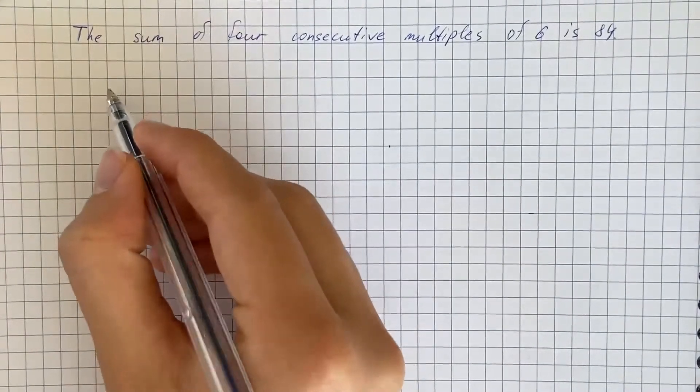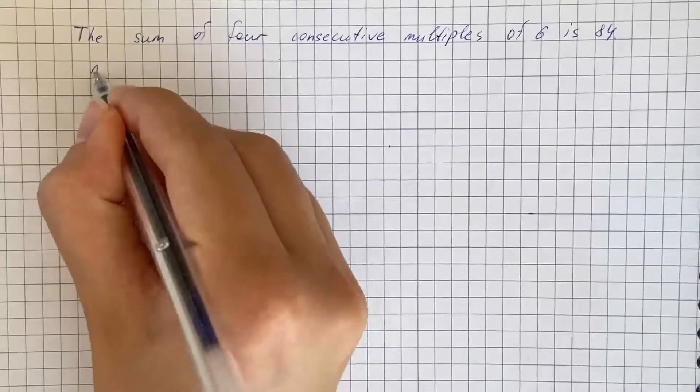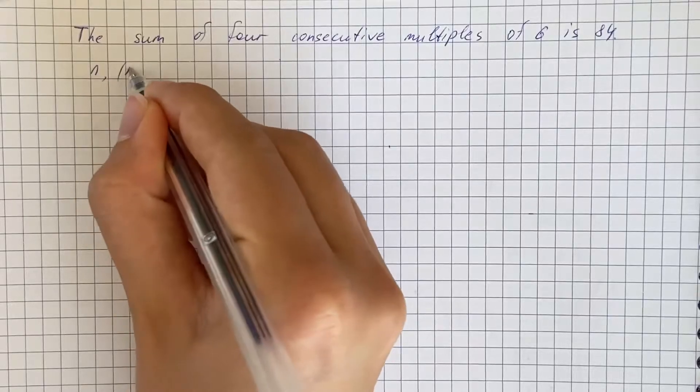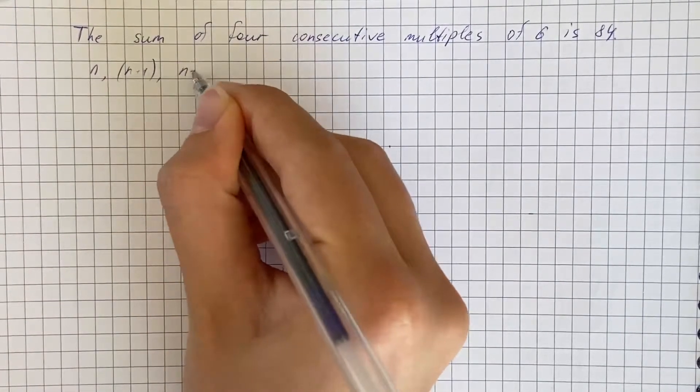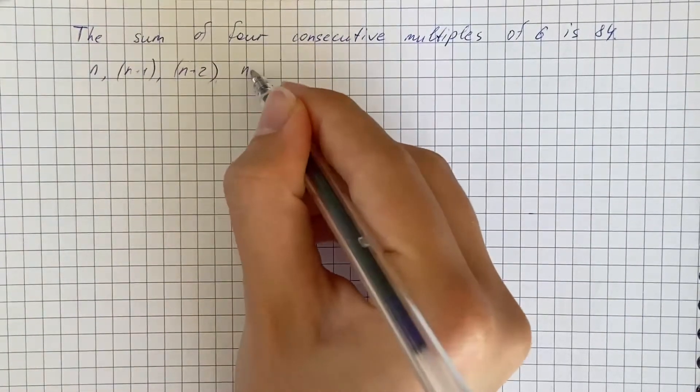Let's suppose that the four multiples are n, n plus 1, n plus 2, and n plus 3.